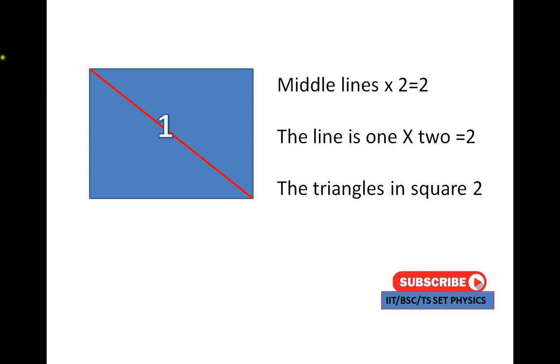First one, see the figure. The middle line is only 1. 1 into 2 equals 2. The lines are 1 and the triangles are 2. You see that the line is 1, the triangles are 2.